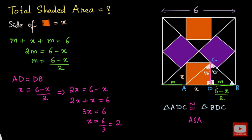Solving the equation: multiply both sides by 2 to get 2x = 6 − x, then bring −x to the left to get 2x + x = 6, so 3x = 6, and x = 6/3 = 2. The side length of the brown square is 2 units, and we can easily find its area.